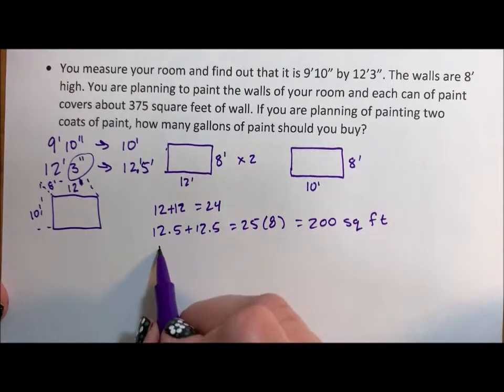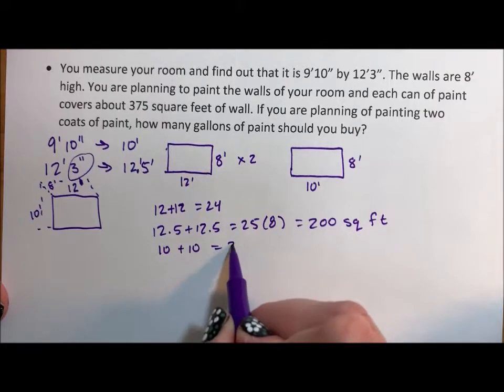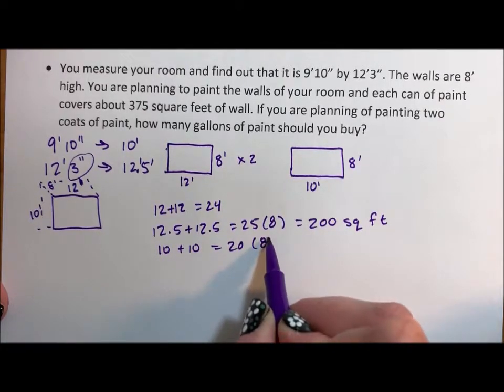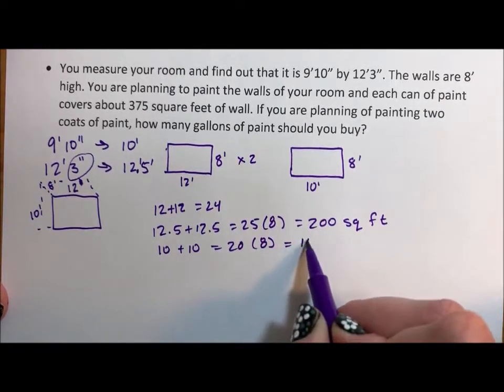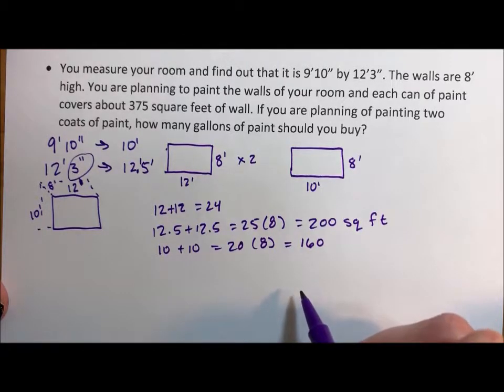10 is easy. 10 plus 10 is 20, and 20 times 8 is 160.